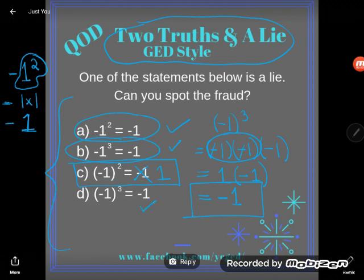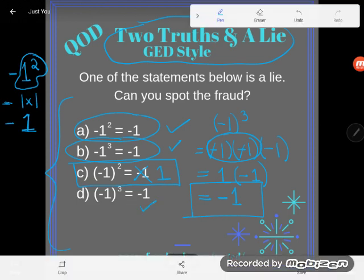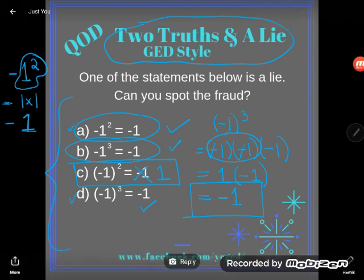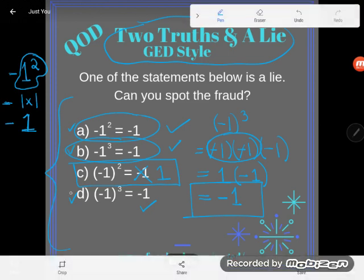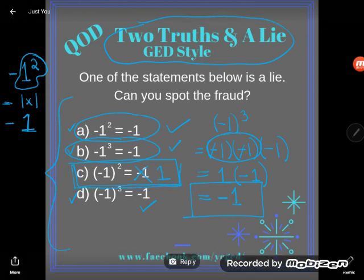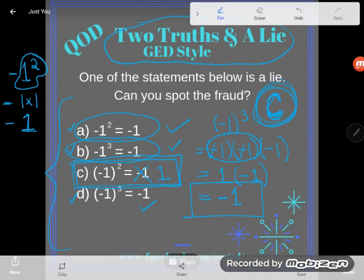Be careful, parentheses can change things up when I am raising negative numbers to a power. All right, so a was true, b was true, d was true. It was c that was the lie. Three truths and a lie today, and the lie was c.